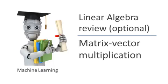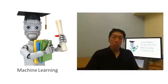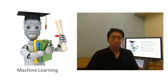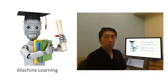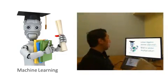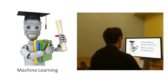In this video, I'd like to start talking about how to multiply together two matrices. We'll start with a special case of that — matrix-vector multiplication, of multiplying a matrix together with a vector. Let's start with an example.